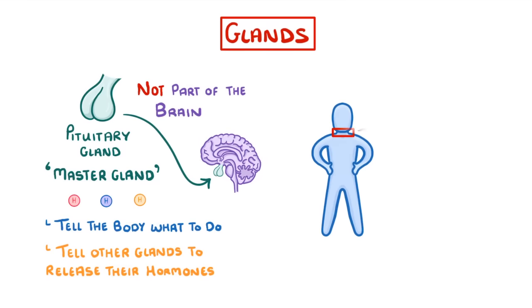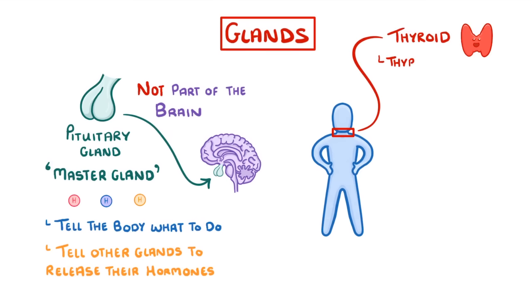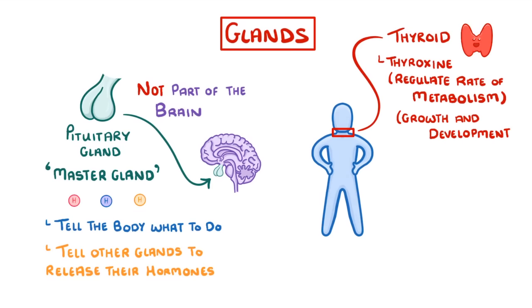Down in our neck, we have the thyroid gland, which produces the hormone thyroxine. This regulates the rate of our metabolism, and also plays an important role in growth and development.